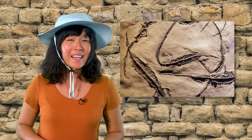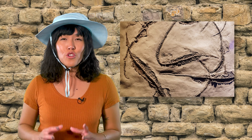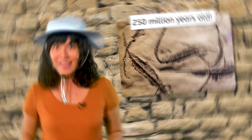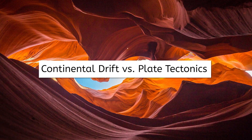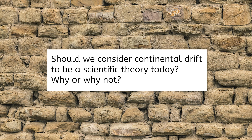This might not seem like a lot, but let's think back to the Mesosaurus fossils again. Thanks to radiometric dating, geologists knew that these fossils were over 250 million years old. That's a lot of time for South America and Africa to slowly drift apart. All of a sudden, Wegener's continental drift hypothesis looked not only possible, but extremely likely — all the evidence we've gathered over time points to it being true. So, what do you think, geologists? Should we consider continental drift to be a scientific theory today? Why or why not? Pause the video and record your thoughts in your notes.